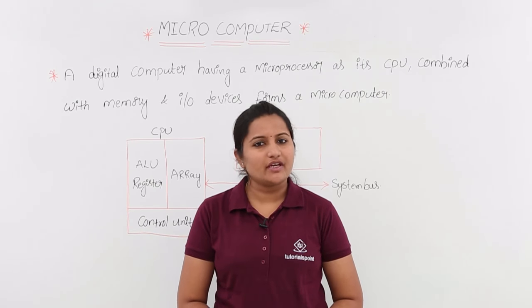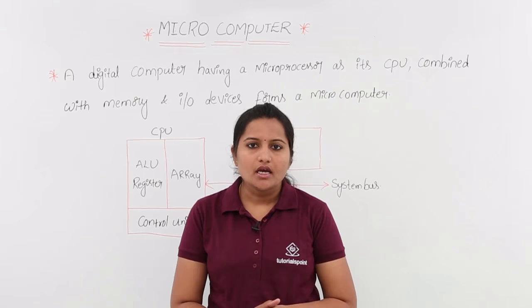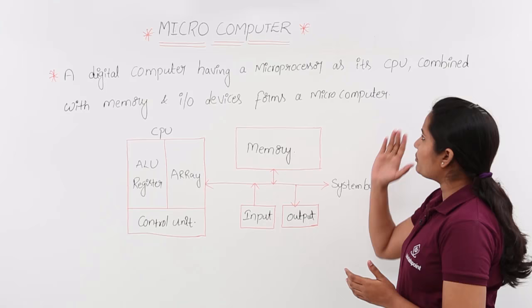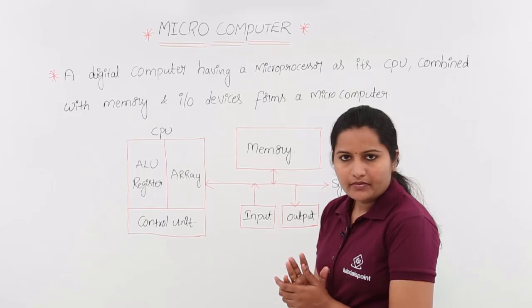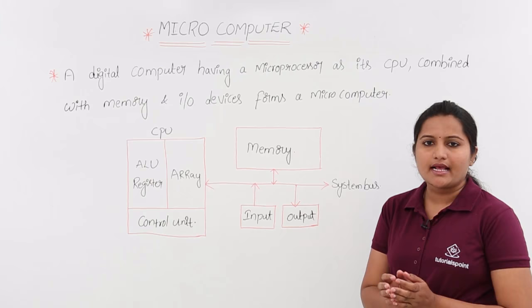In this class we are going to discuss what is meant by a microcomputer. A microcomputer is nothing but a microprocessor with some I/O devices. A digital computer having a microprocessor as its CPU, combined with memory and I/O devices, forms a microcomputer. For example, if you are having a digital computer with a microprocessor as CPU, that is definitely called a microcomputer.